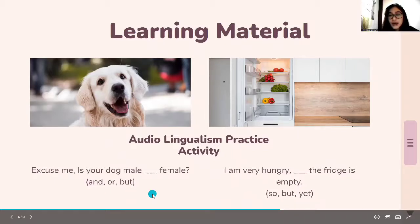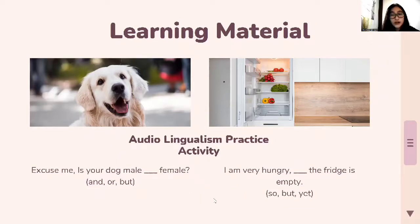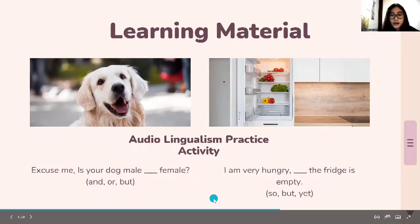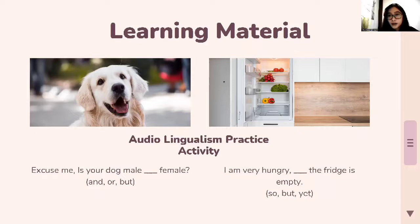The next sentence is: 'I am very hungry, ___ the fridge is empty.' The choices are: 'so,' 'but,' and 'yet.' The correct conjunction is 'but,' because it is used to connect two sentences or two ideas that are opposite to each other.